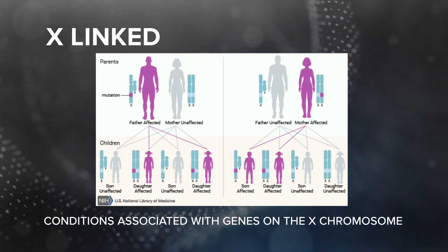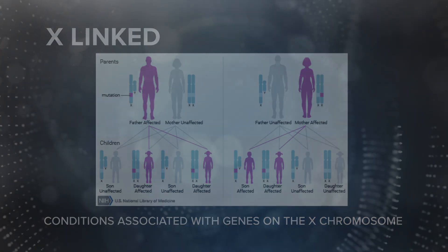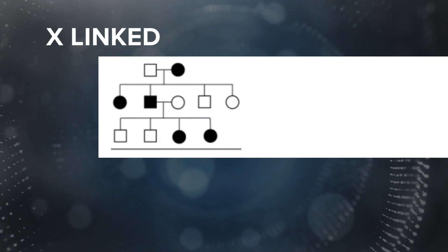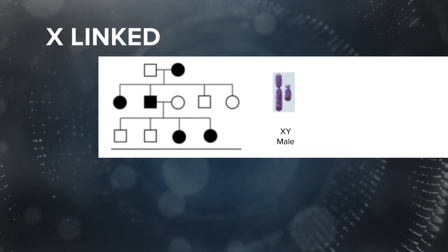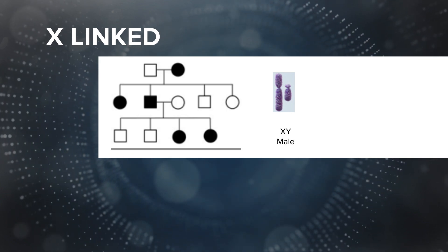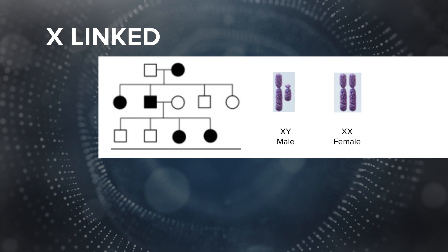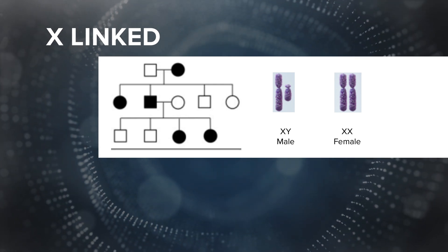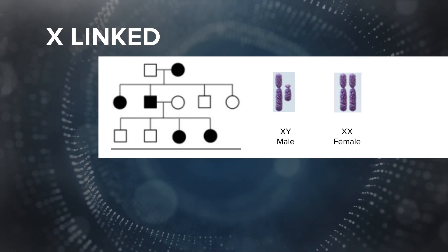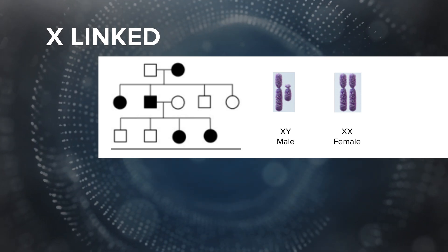As the name implies, X-linked conditions are conditions associated with genes on the X chromosome. X-linked conditions disproportionately affect males. This is because males have one X chromosome and one Y chromosome, so males are hemizygous for genes on the X chromosome. A female often needs to inherit two copies of the mutation in order for the condition to be expressed. However, this is not always the case.